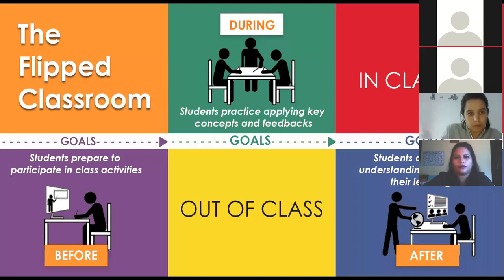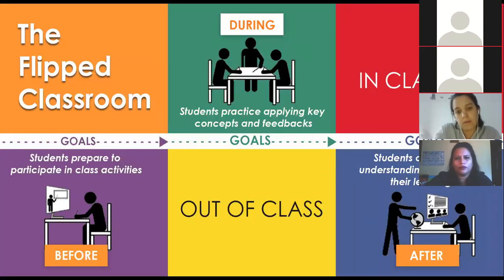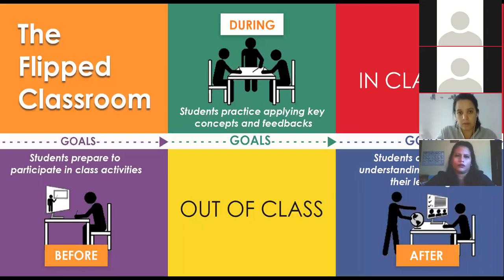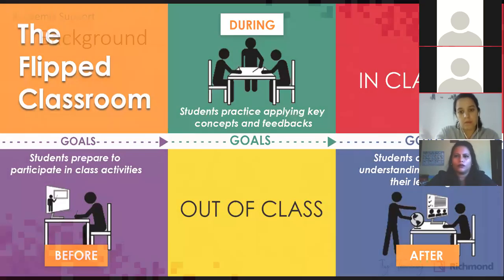If we put this in a summary picture, we have what happens during class time and also what happens outside the class before and after. In the purple square, students prepare to participate in class activities by watching videos or reading specific textbooks or audiobooks selected by the teacher before class, outside the classroom. During class, students actively participate and apply the key concepts they previously reviewed. After class, they can expand what they did, continue checking their understanding, extend their learning by doing other tasks, and work together interactively with their peers.